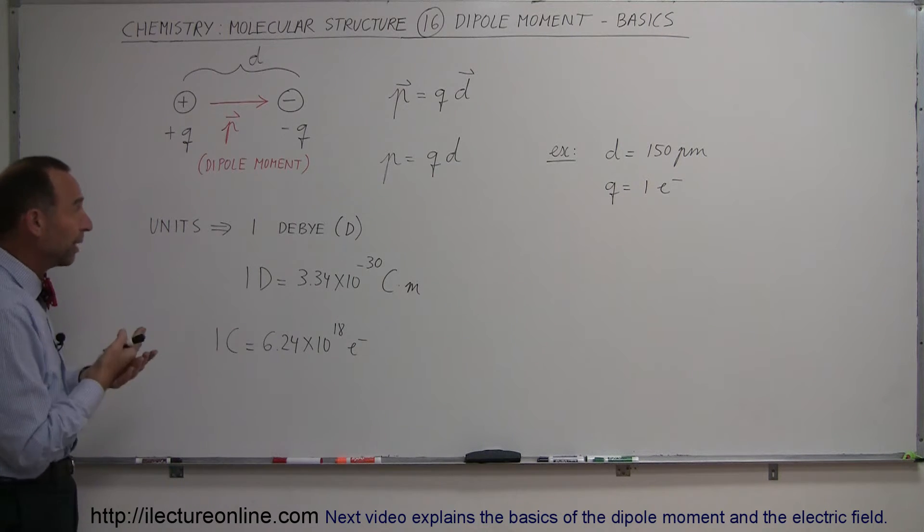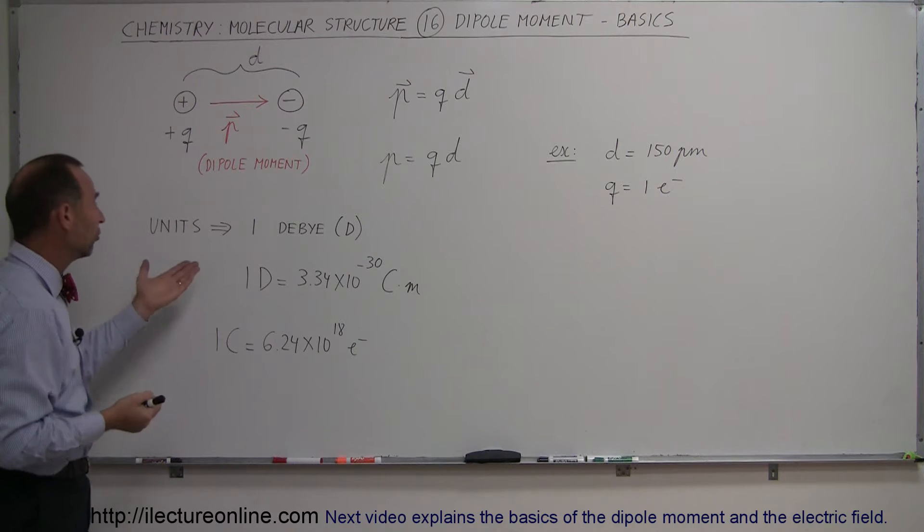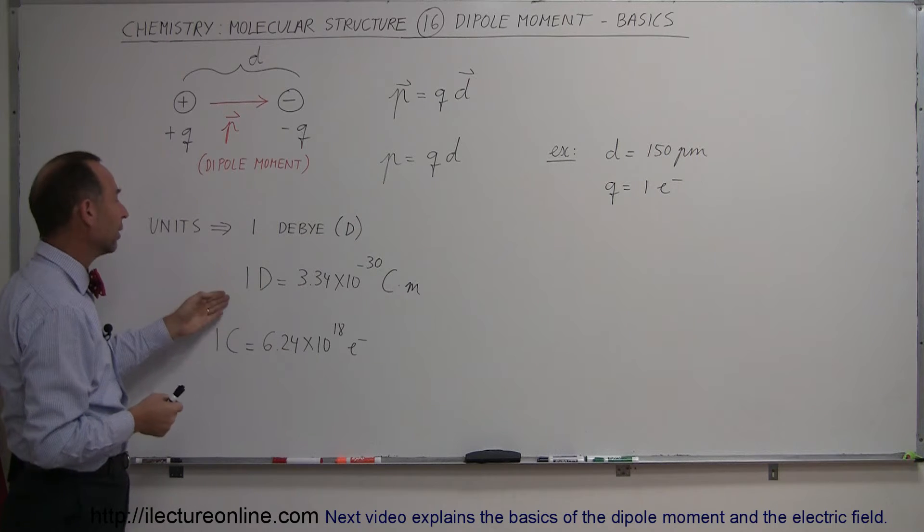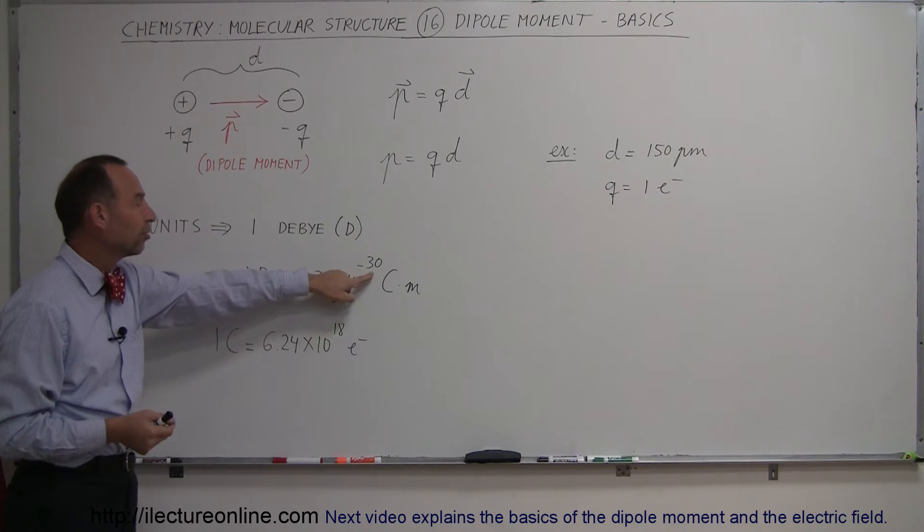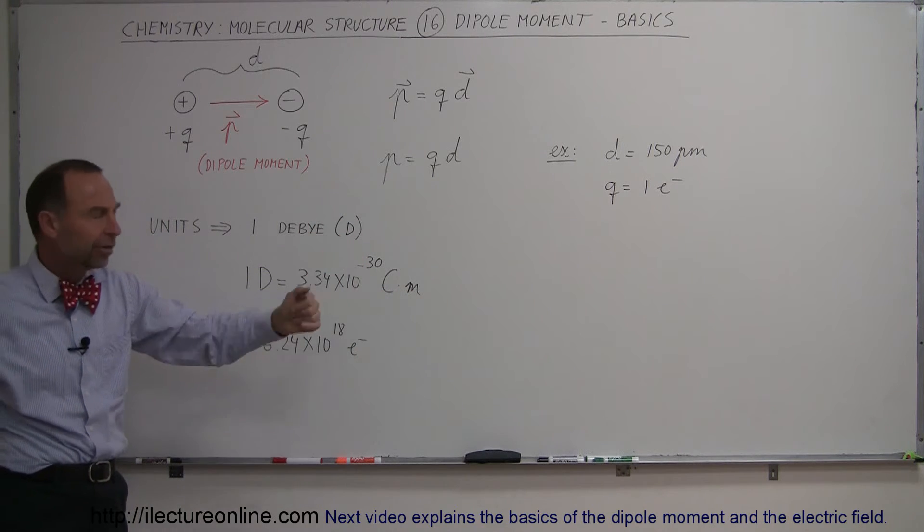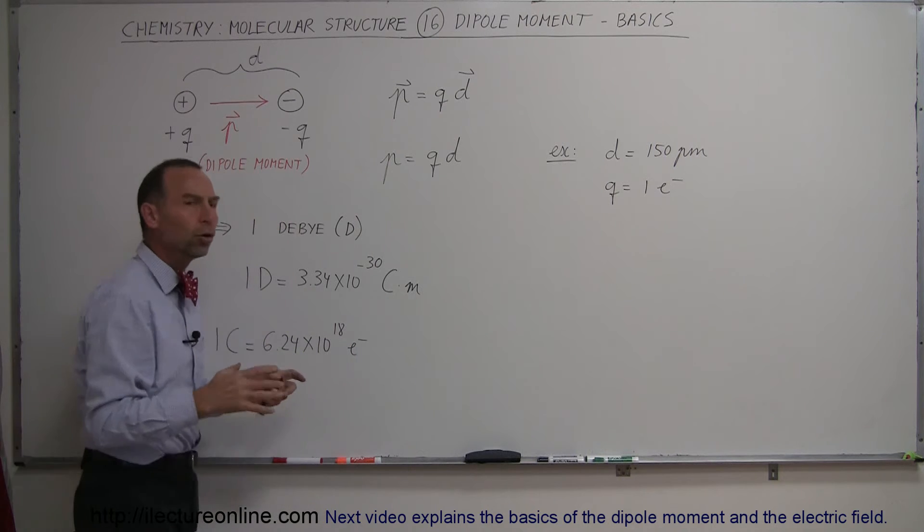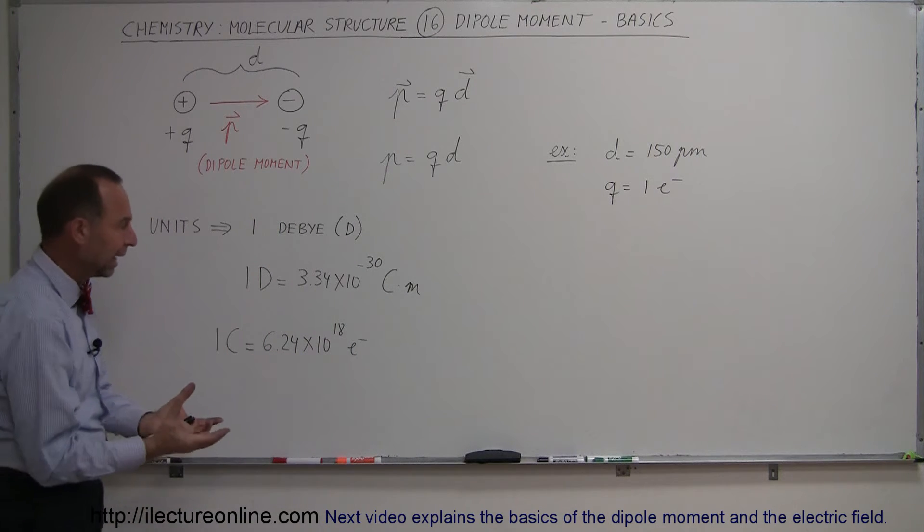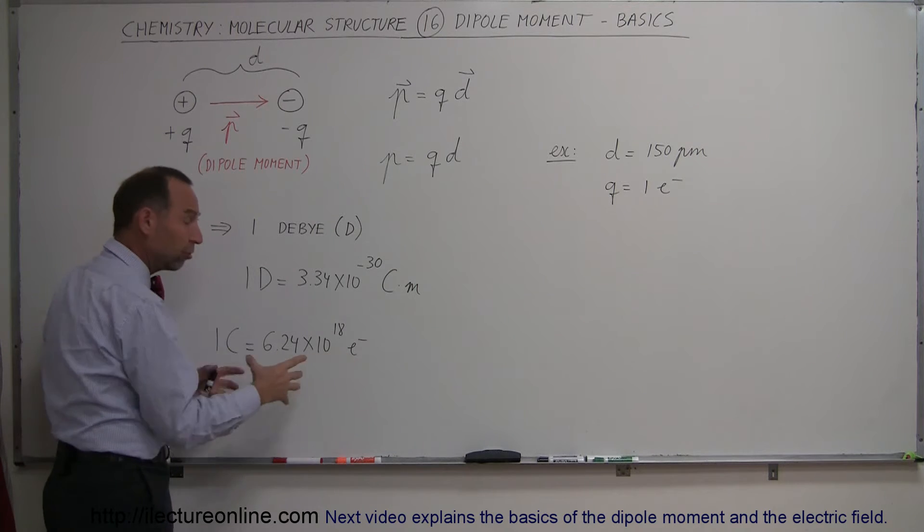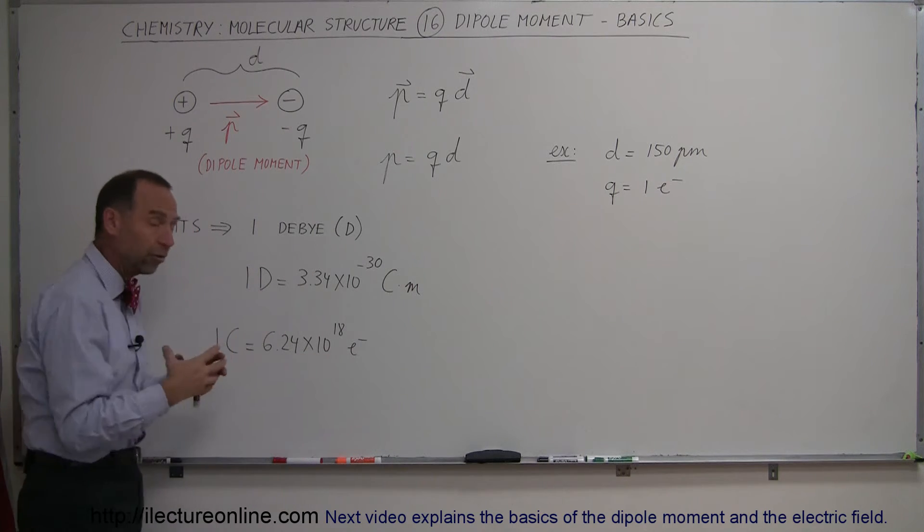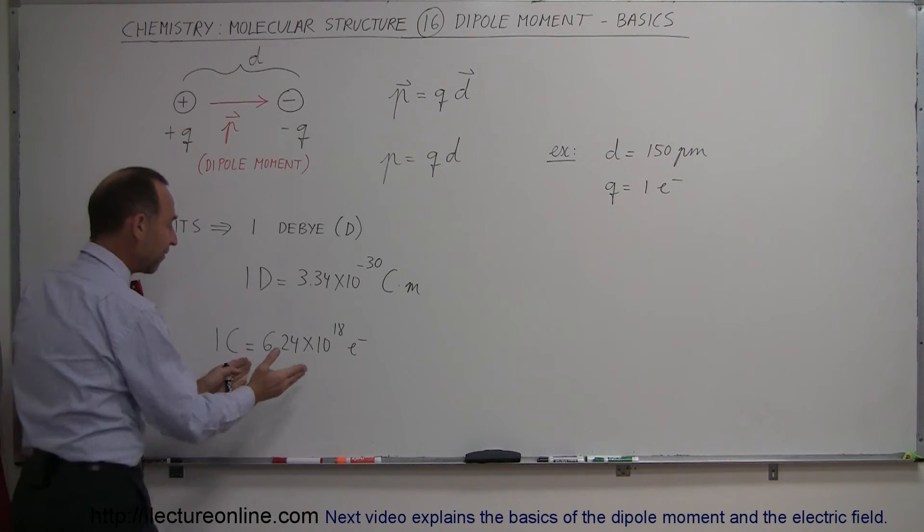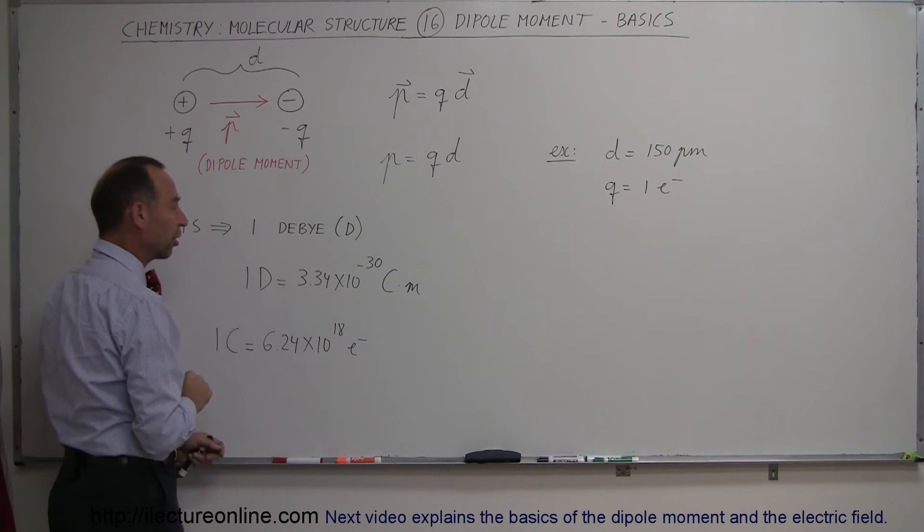The units we use to express the dipole moment is the unit of the Debye, and we use the capital letter D to indicate that. One Debye is 3.34 times 10 to the minus 30 coulombs times meters. Now everybody knows what a meter is. Not everybody readily knows what a coulomb is. A coulomb is a bunch of charges. If you have 6.02 times 10 to the 18 electrons put together, or that many protons, you have one coulomb of charge.